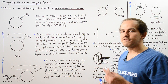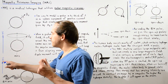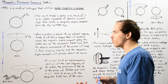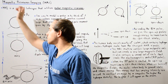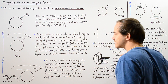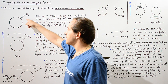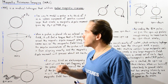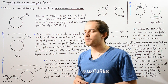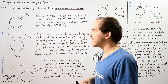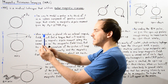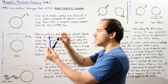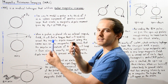What happens when we flip on an external magnetic field? Suppose we turn on a static magnetic field B that is constant and uniform, pointing upward along the Y axis. Whenever we place a magnetic dipole moment into a magnetic field, that field creates a torque acting on the magnetic dipole moment, trying to orient it along the same axis as the magnetic field lines.